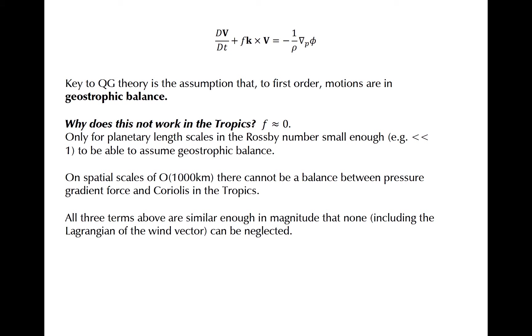On planetary spatial scales, and away from the equator, we can roughly assume geostrophic balance, but most of the phenomena we discuss in this class are much smaller in spatial scale than order 10,000 kilometers. This means that all three terms in the momentum equation are similar in magnitude, and that none of them can be neglected.